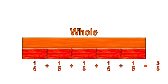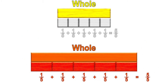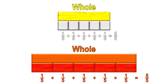Notice that in each of the previous examples, different length rods were used to represent one-fifth, because the fractional part is always in relation to the size of the whole. Each scenario uses a different sized whole, making each one-fifth part a different size.